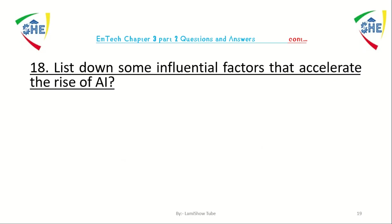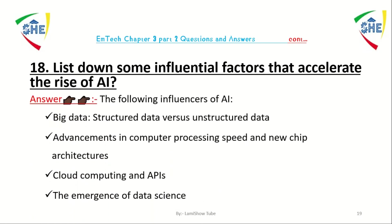Question number 18: list down some influential factors that accelerate the rise of artificial intelligence. The influential factors include: big data, advancement of computer processing speed and new chip architecture, cloud computing, application programming interfaces, and the emergence of data science.